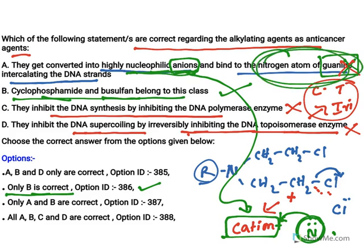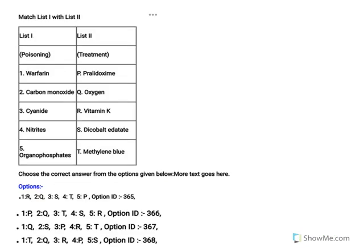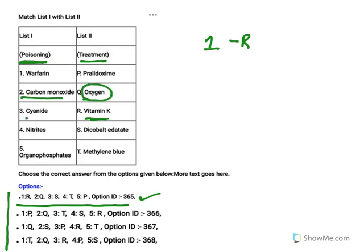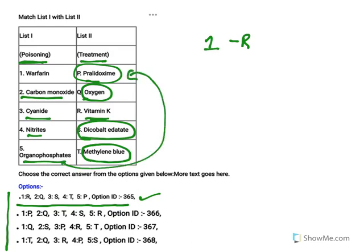Now match the antidotes: warfarin toxicity is treated by vitamin K, so one goes with that — only one option has this, so that is the answer. Carbon monoxide poisoning is treated by administering oxygen. Cyanide poisoning is treated by dicobalt edetate. Nitrate poisoning is treated by methylene blue. Organophosphate poisoning is treated by pralidoxime — and D-P is present in only one option, confirming the answer.